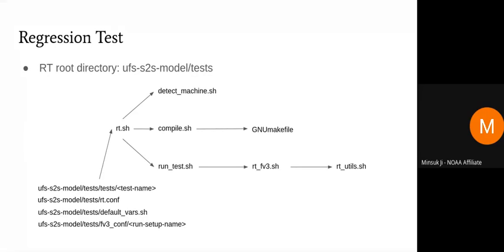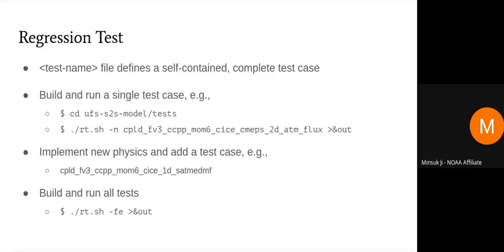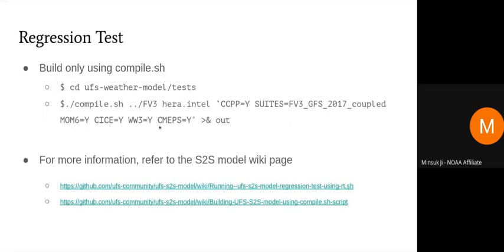The test name file, found under UFS S2S model slash test slash test, defines the self-contained test case — think of it as the entry point. If you want to run multiple test cases, you put those in rt.conf and rt.sh will be able to run all of them. If you want to run a single test, you invoke the command with minus n followed by the test name.